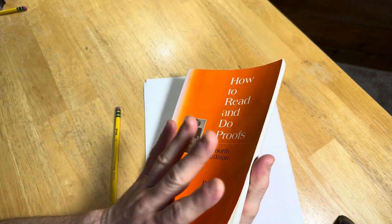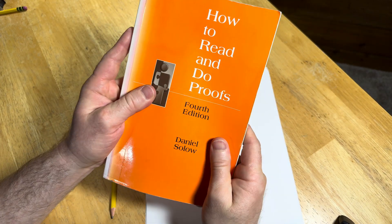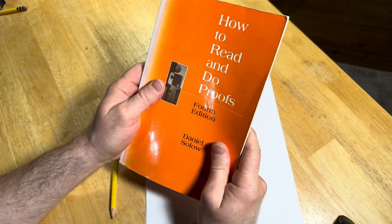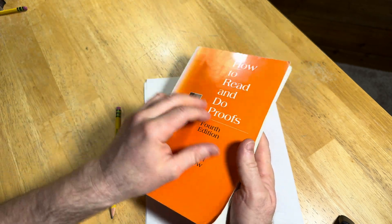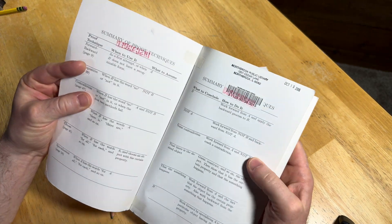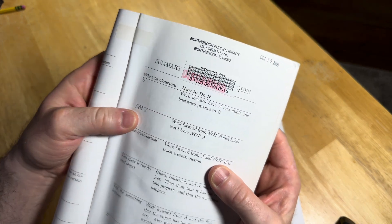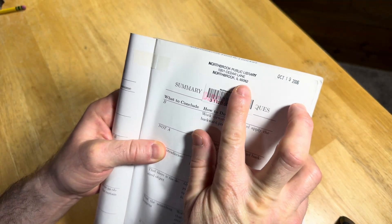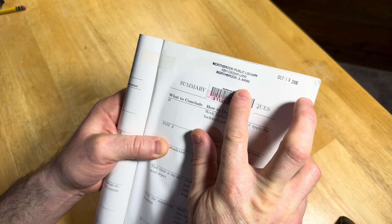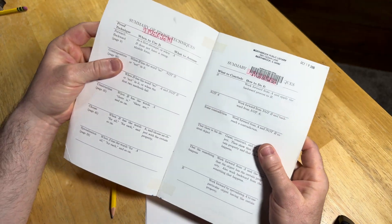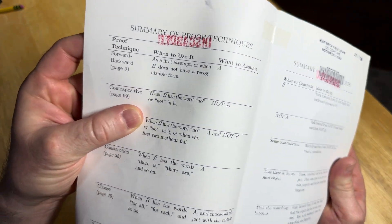I think it's a great book. This book was recommended to me by a former professor a very long time ago and I've had it since then. So this one is an ex-library book, meaning that it belonged to a library. This was part of the Northbrook Public Library and you see there's a summary of proof techniques.